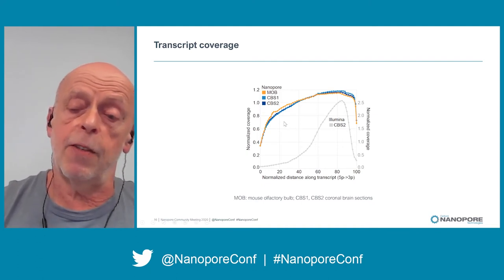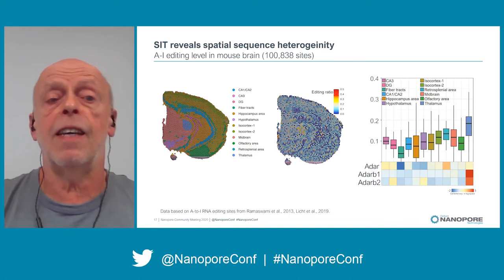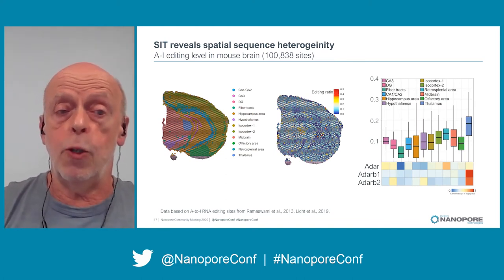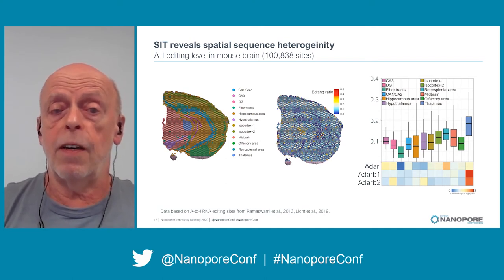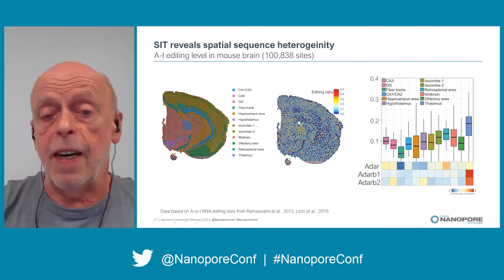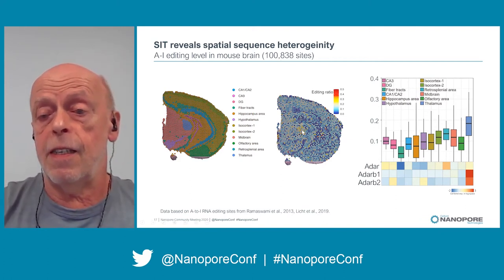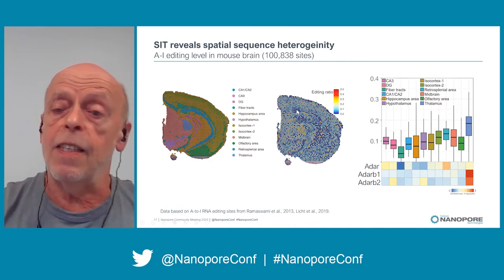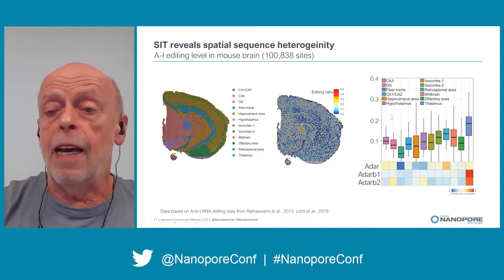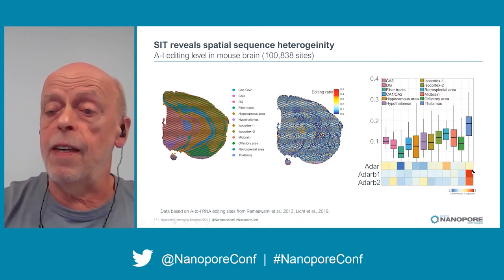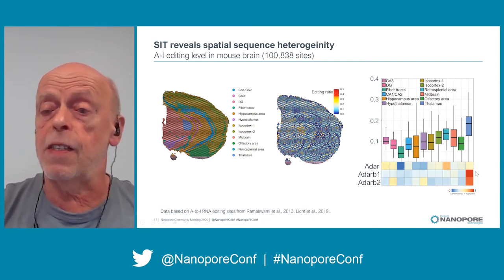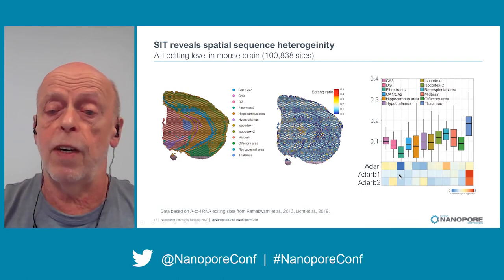Since we have full-length sequencing information, we can also analyze SNVs. Here we analyzed the A-to-I editing level in mouse brain for 100,000 editing sites. The data show that the highest editing level is in the thalamus and the lowest is in the fiber tracts. This nicely correlates with the expression level of the editing enzyme ADAR, which is highly expressed in the thalamus and very low in fiber tracts.